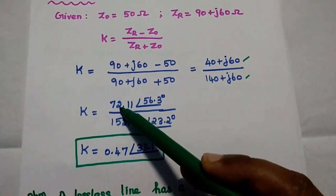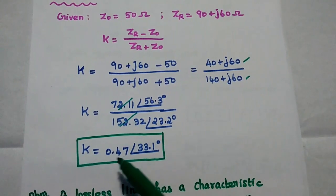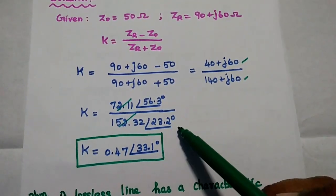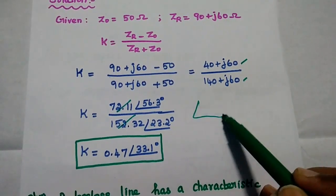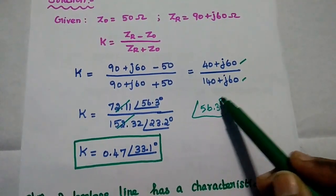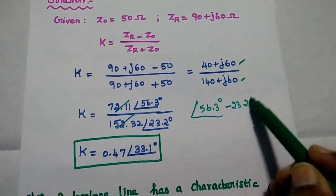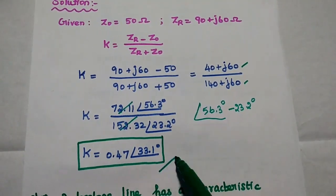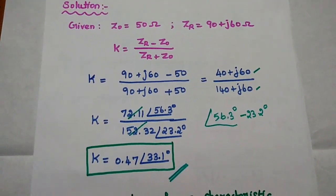Now we divide the two polar values. The magnitude is 72.11 divided by 152.32, giving 0.47. For the angle, in division we subtract: 56.3 minus 23.2 equals 33.1 degrees. So the reflection coefficient K is 0.47 at angle 33.1 degrees. This is the reflection coefficient for the given line.